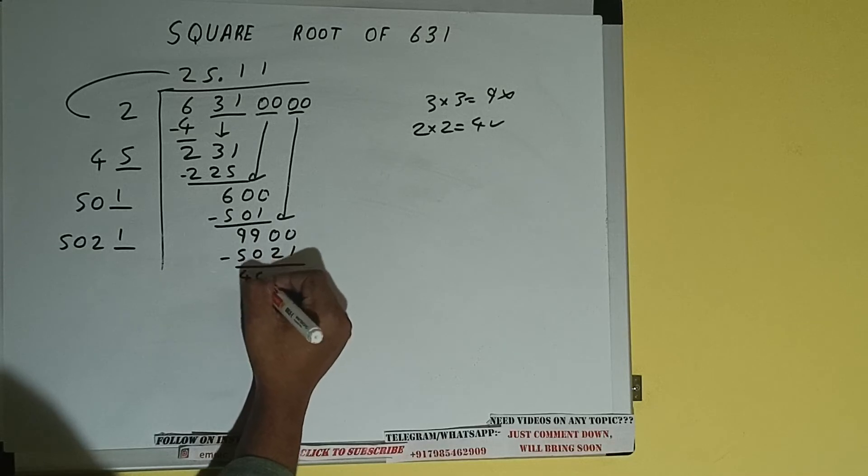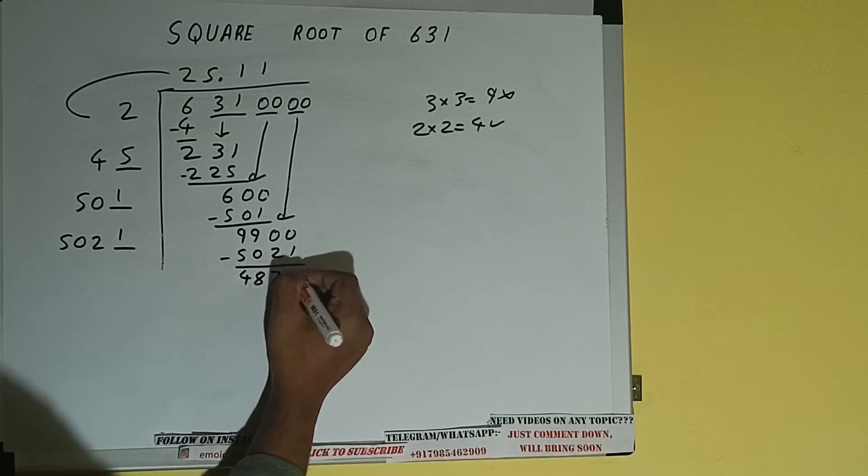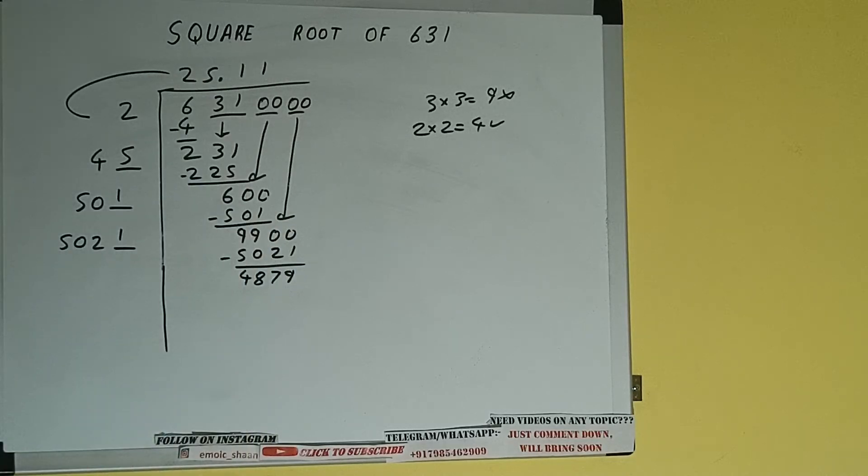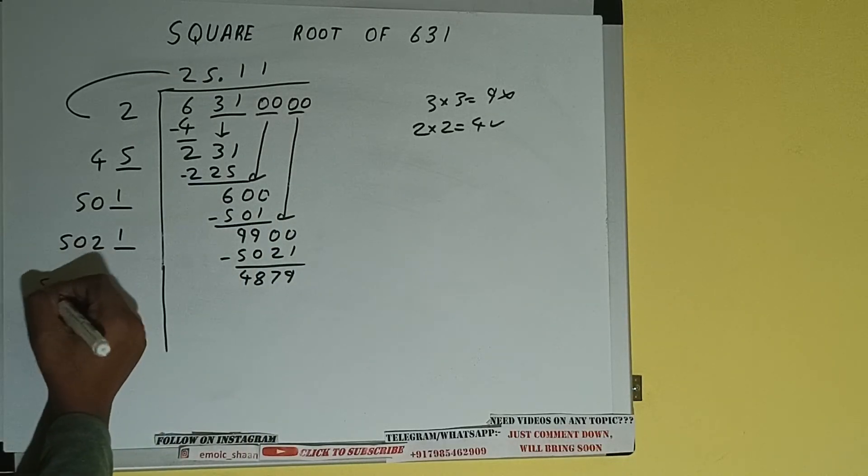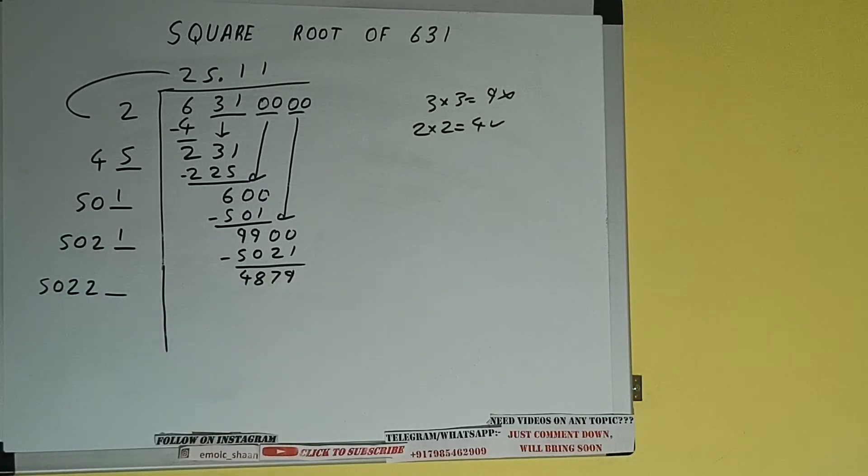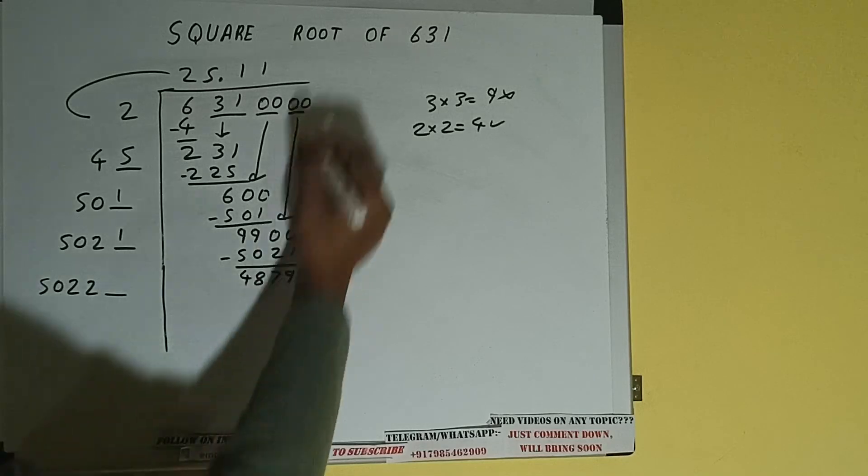Now 5021 into 1, so add both, so 5021 plus 1 will be 5022, and one digit extra. This number we need to make it big, so bring the next pair of zeros down.